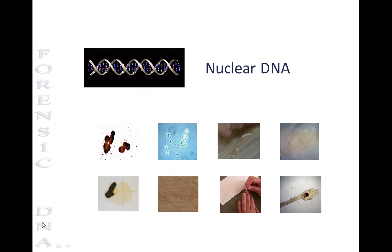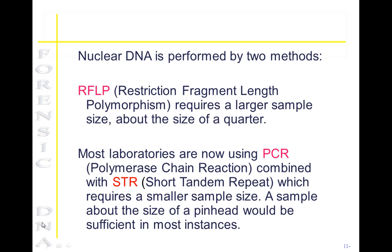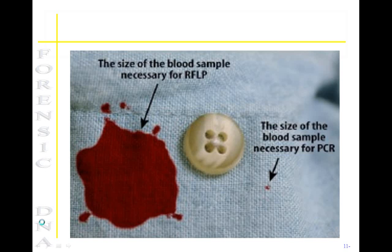All biological evidence can be subjected to DNA testing — it just depends on which type of DNA, whether nuclear DNA or mitochondrial DNA. Nuclear DNA can be analyzed by two different methods: RFLP or PCR combined with STR. RFLP requires a larger size sample, as you can see by this example, where PCR testing can use just a sample the size of a small pinhead.